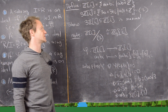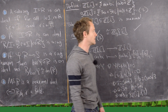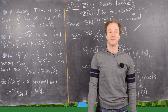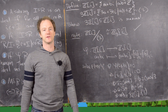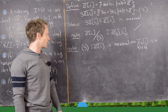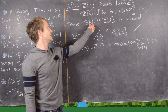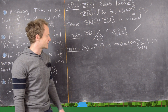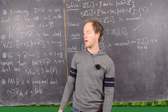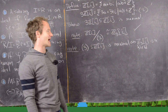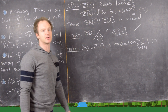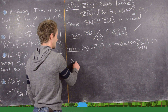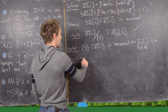Our next goal is to show that (3) is a maximal ideal. We will do that by showing that the quotient ring Z₃[i] is actually a field, since a maximal ideal corresponds to the quotient being a field.